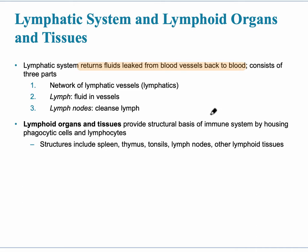You can think of the lymphatic system like a giant washing machine — the washing machine of our body. What it does is it goes through the capillary bed, dispersed within it, and it returns leaked fluids from the blood vessels back to the blood.